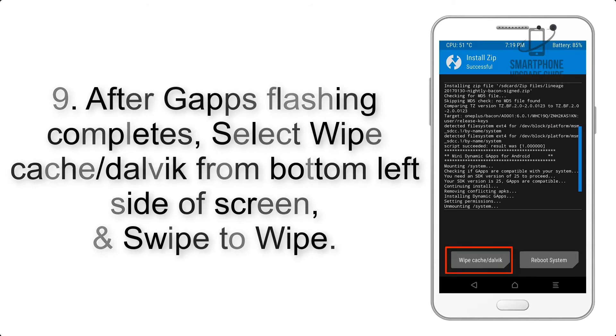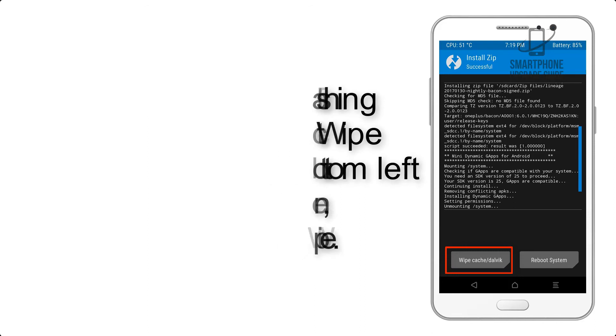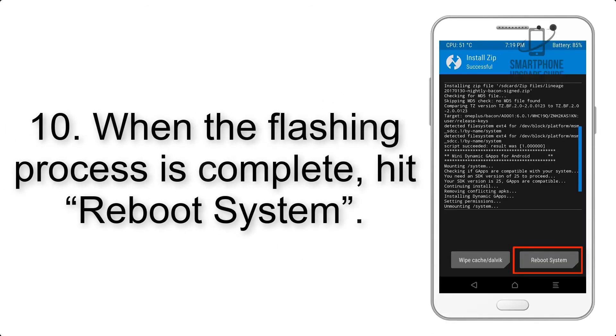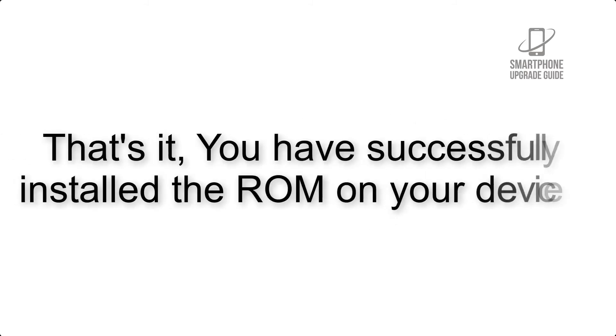Step 9: After gapps flashing completes, select Wipe Cache and Dalvik from the bottom left side of the screen and swipe to wipe. Step 10: When the flashing process is complete, hit Reboot System. That's it — you have successfully installed the ROM on your device.